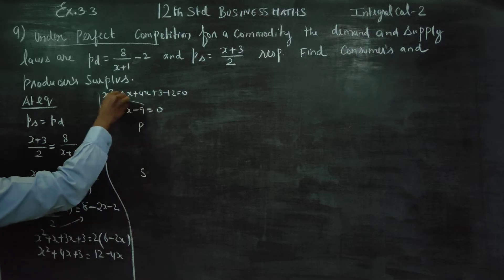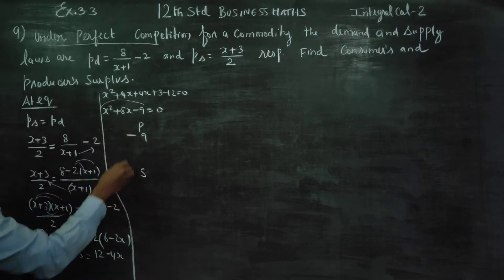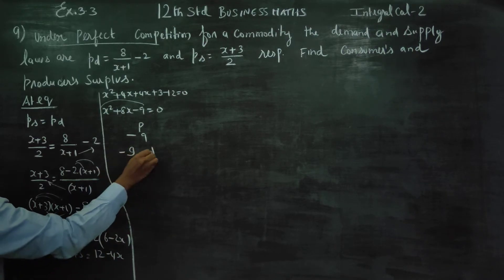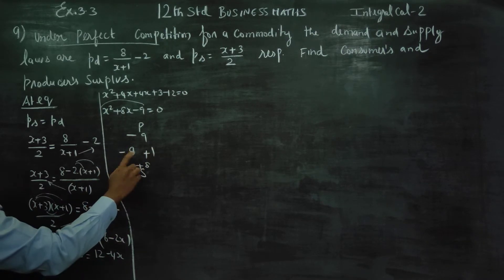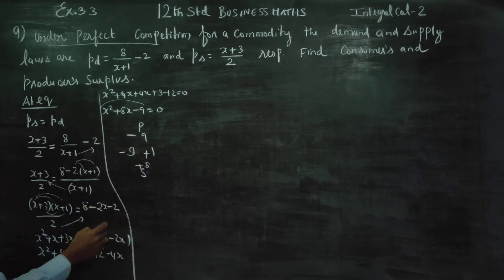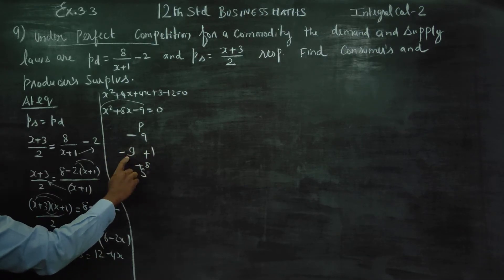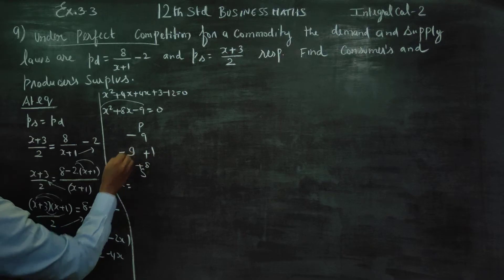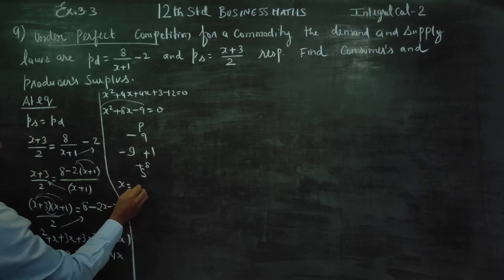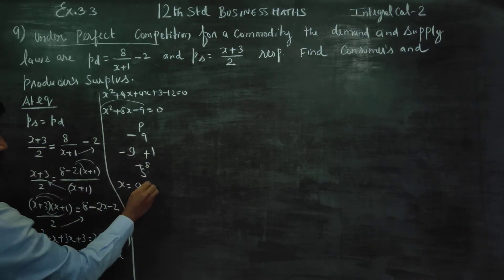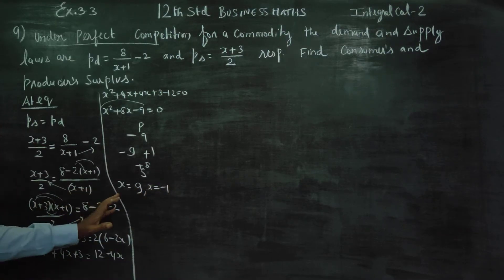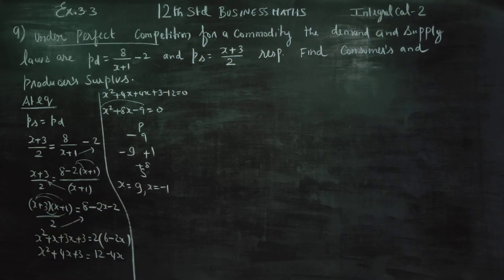For x² + 8x - 9 = 0, the product is 1 times minus 9 equals minus 9. So x² + 8x - 9 = 0. The factors give x = 9 (positive) and x = minus 1 (negative). We take only the positive number, so x is equal to 1.